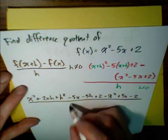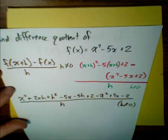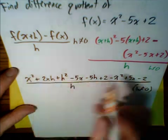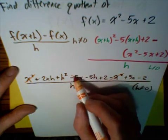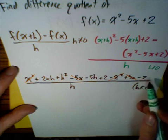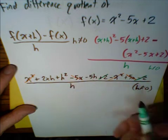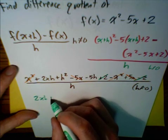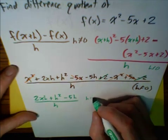This entire expression is over h, with h not equaling 0. Now let's simplify by pairing up terms: x squared and minus x squared cancel out; plus 5x and minus 5x cancel out; plus 2 and minus 2 cancel out. What we're left with is 2xh plus h squared minus 5h, all over h.